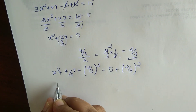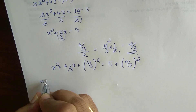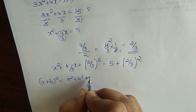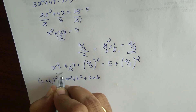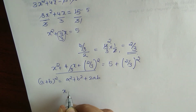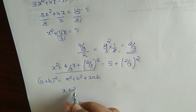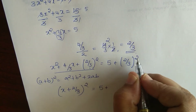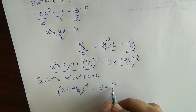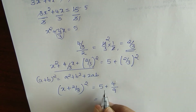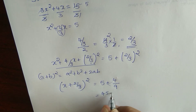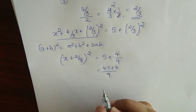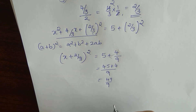We know that (A plus B) whole square equals A squared plus 2AB plus B squared. So the left side becomes (x plus 2 by 3) whole square. On the right side, 2 squared is 4 and 3 squared is 9, so by cross multiplication we get 45 plus 4 by 9, which equals 49 by 9.